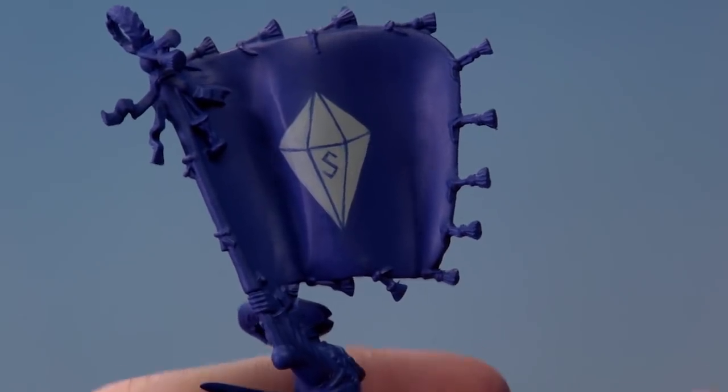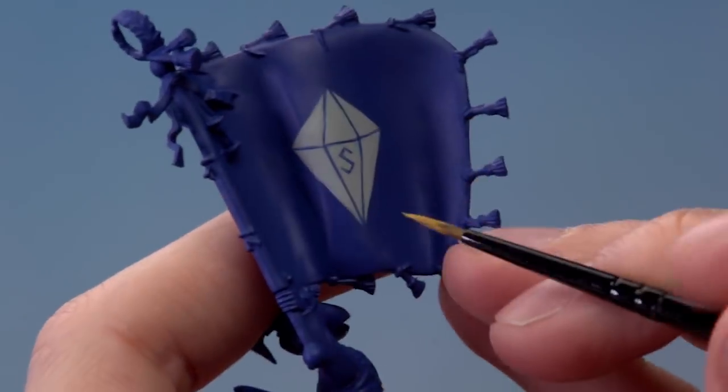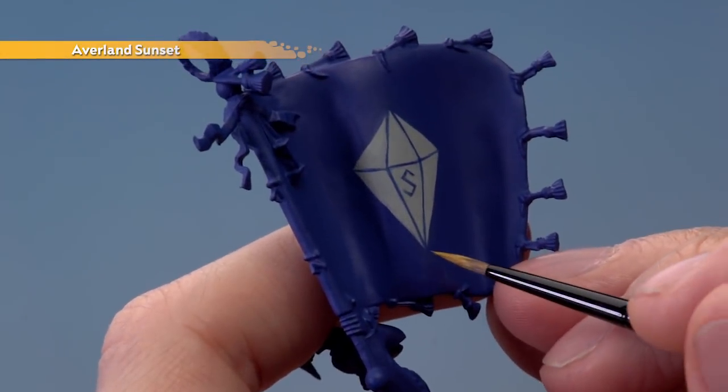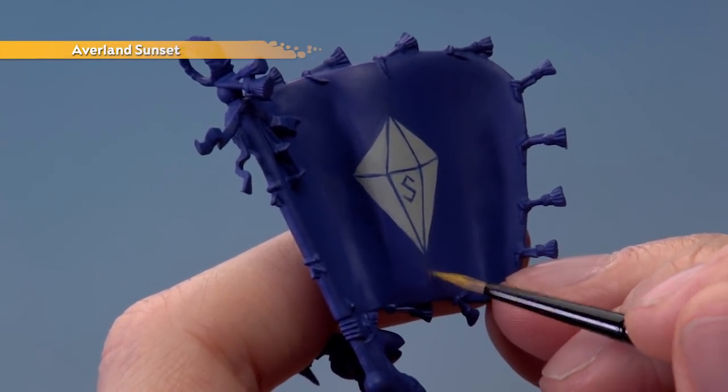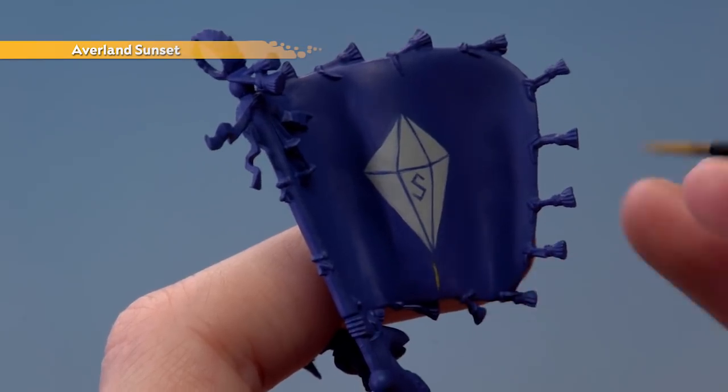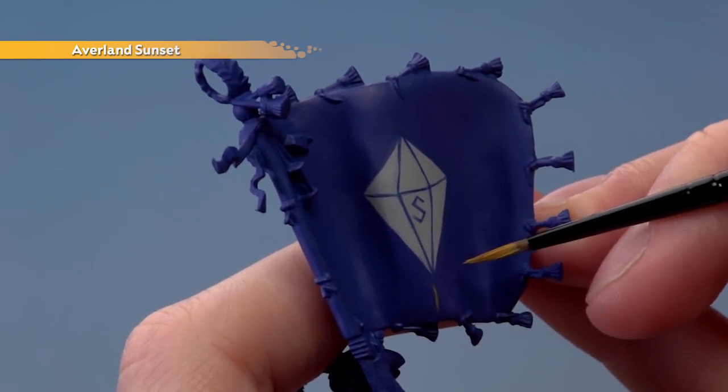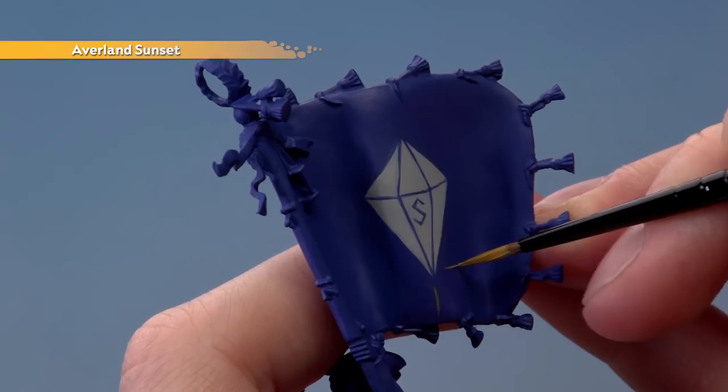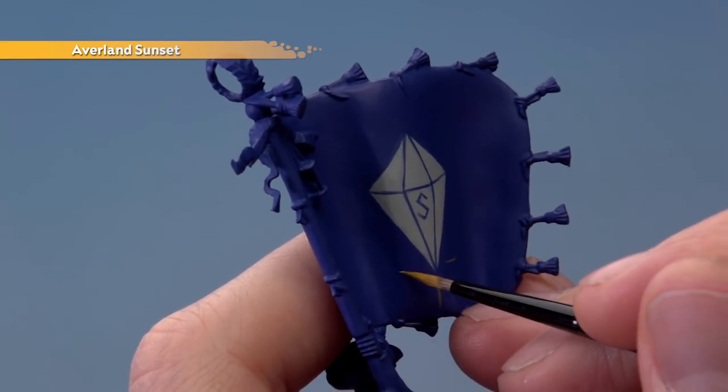Now that we've finished painting in our gem we're ready to add the yellow designs around it, and for this we need Avaland Sunset. Now for the one underneath what you do is start out with a line going down the middle like that, straight down, and then we need to add one to the side around about here and then another one around about here.